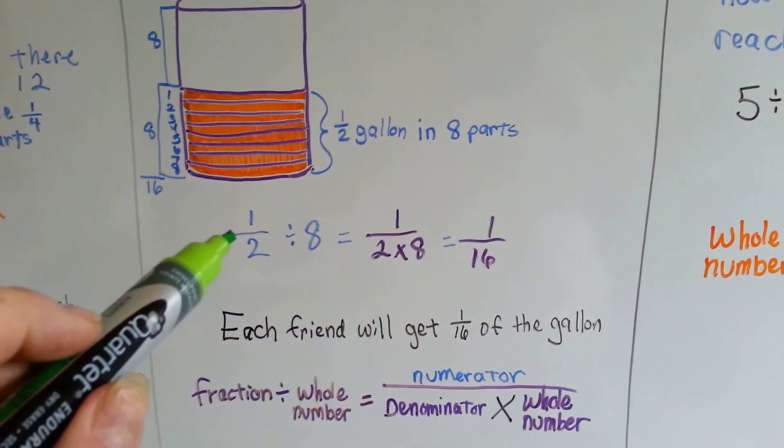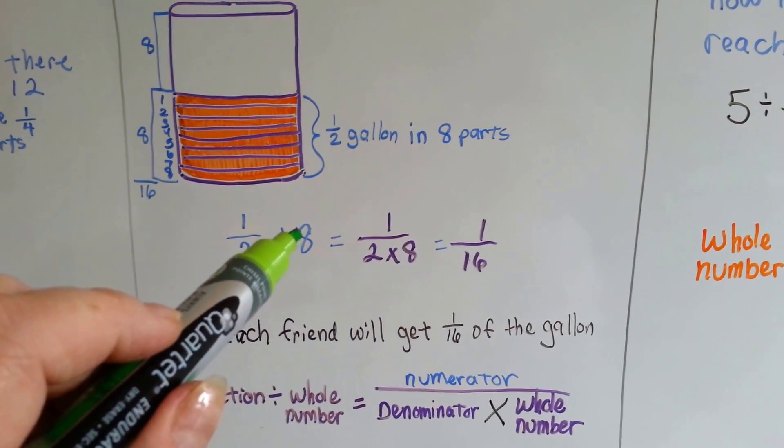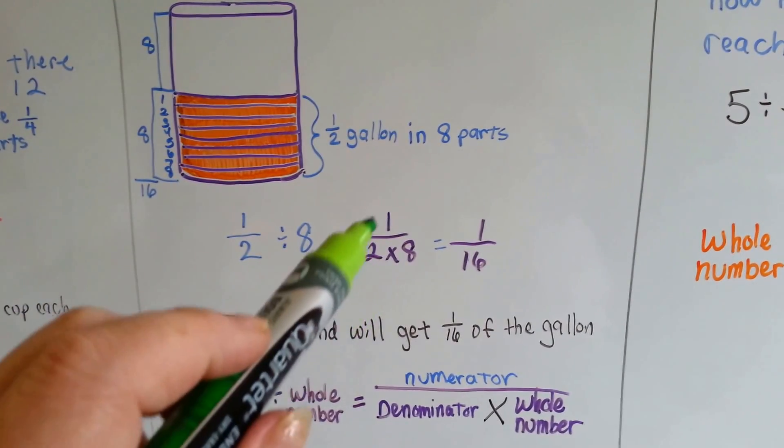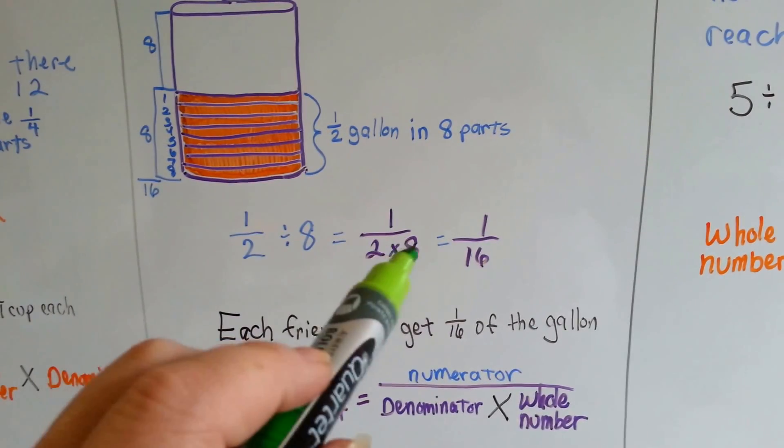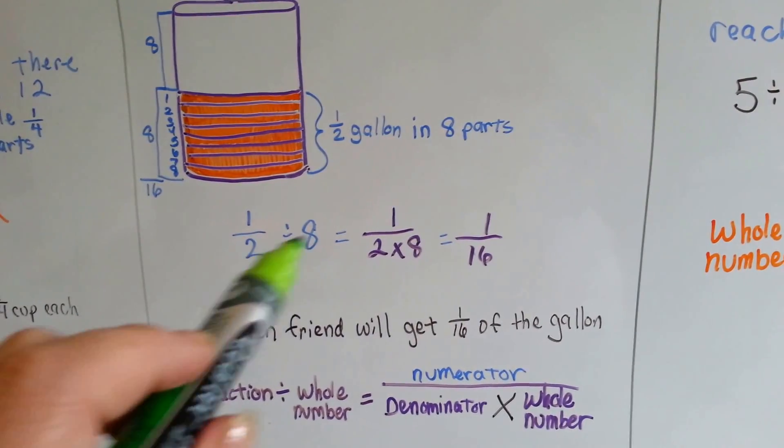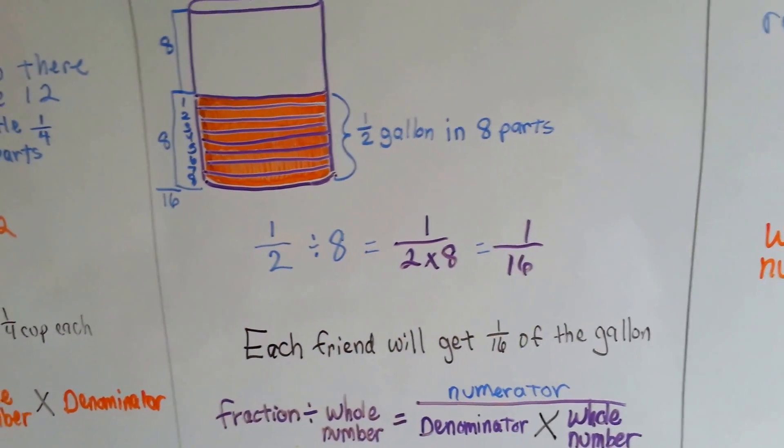So remember, when you have a fraction and you're dividing it by a whole number, it's the same thing as putting the numerator up on top and just multiplying the denominator by the whole number, the two times the eight. So it's one-sixteenth.